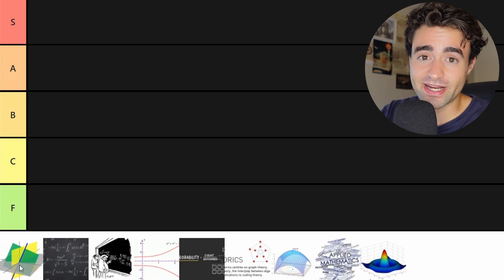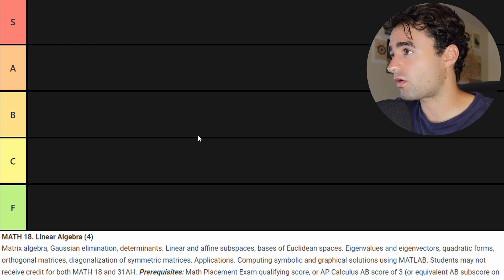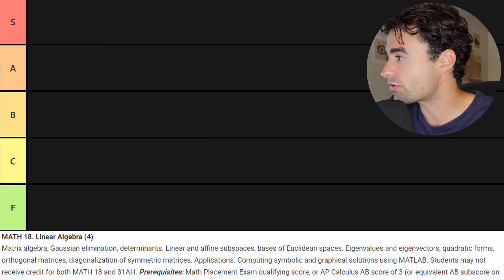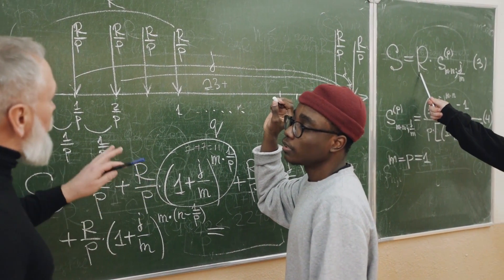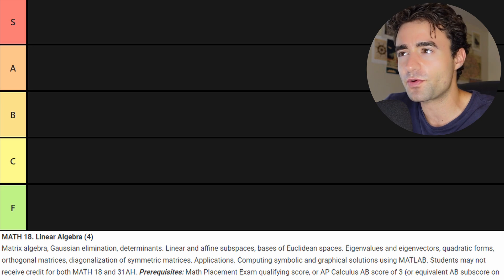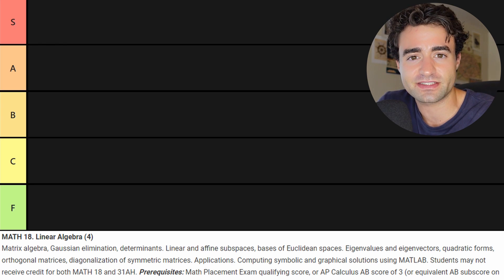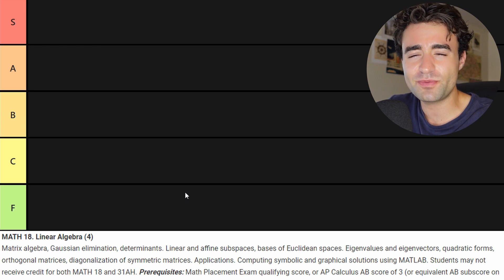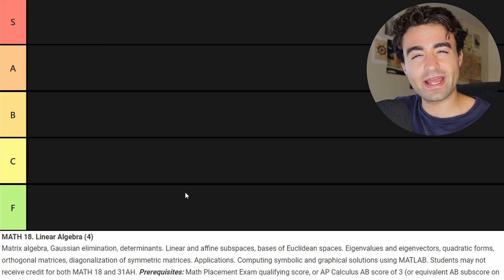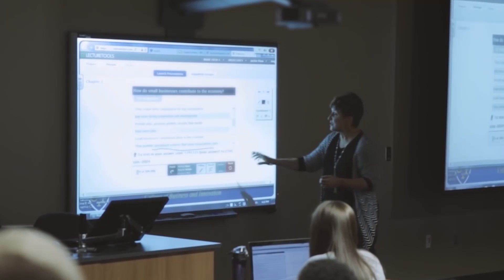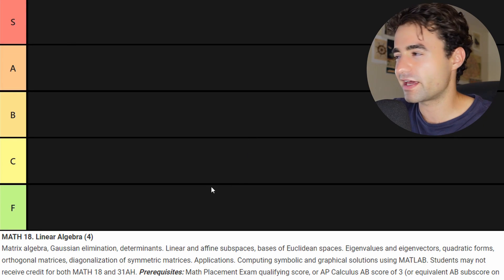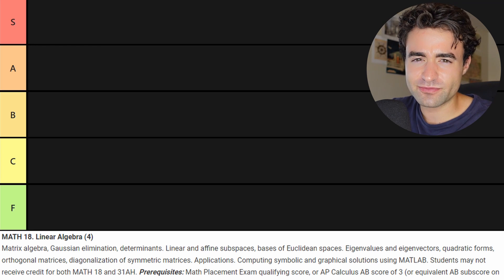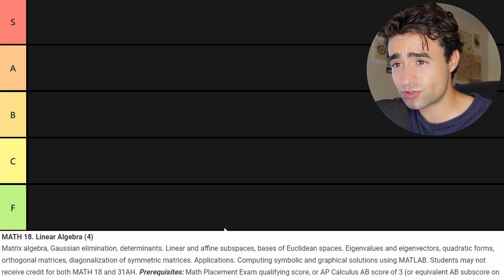The first class is linear algebra. This is really an essential class for pretty much all computer scientists and mathematics majors — you go over matrices, Euclidean spaces, eigenvalues, eigenvectors, and it's ultimately the basis of a lot of future subjects, both in machine learning and computer graphics. I personally found this class pretty difficult, but not really in terms of the actual subject matter — more in how the class was actually structured. My professor wasn't great, and the lectures ended up being convoluted and really confusing, and the exams were really, really hard.